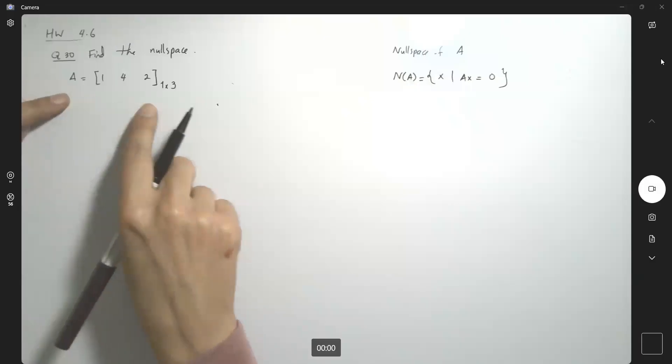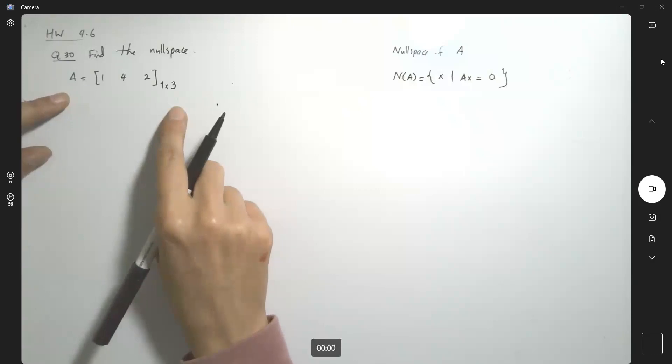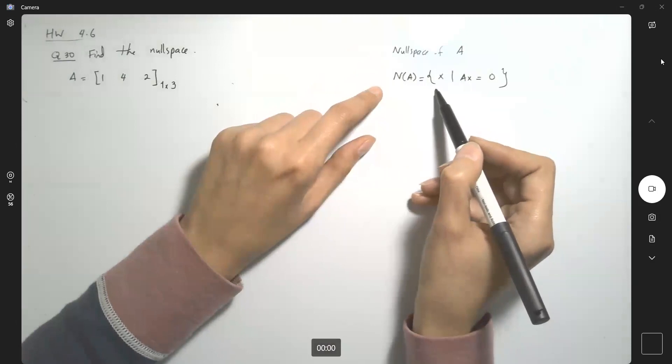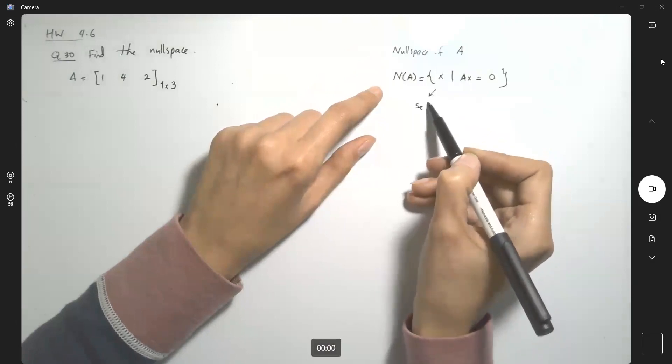When you compare this to find the null space of the associated matrix here, remember the definition. When we're talking about null space of A, you're basically finding a set of all solutions.